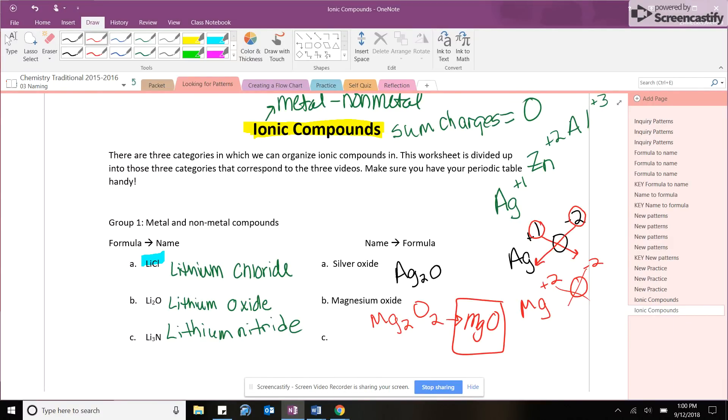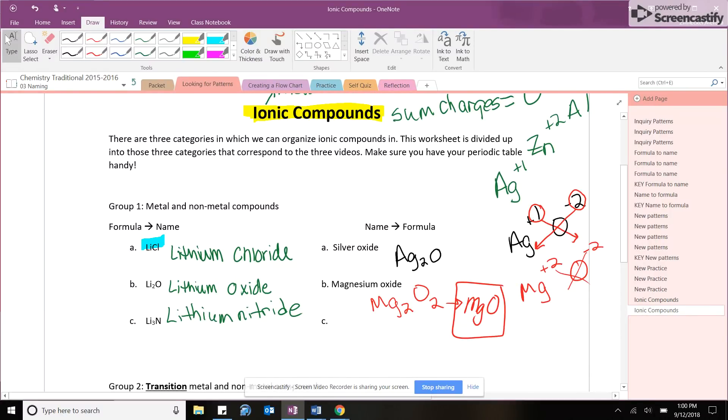So whenever, if you're going to use a crisscross method, at the end, you always have to reduce to your lowest ratio for your atoms. So like if somebody just did math, they know a plus two and minus two, they need one of each, but those who are using crisscross, they just have to look at those numbers and reduce them if they can. Exactly. Awesome. Let's do one more.